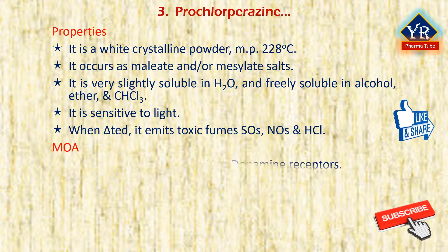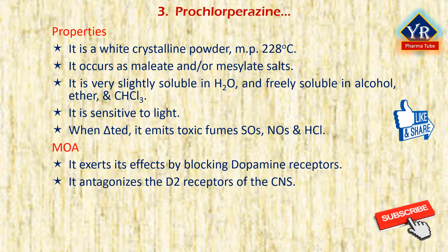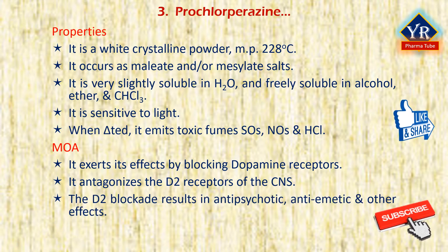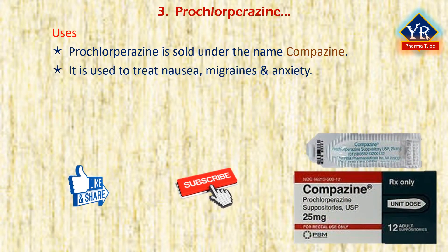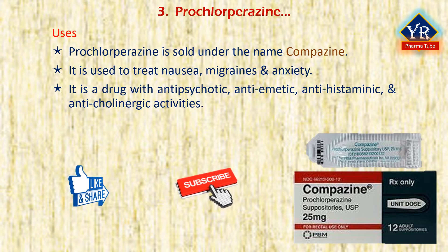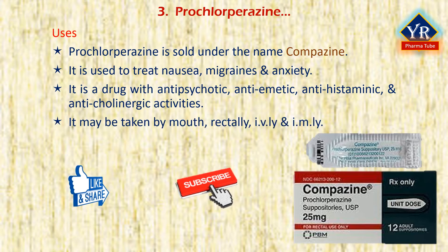Prochlorperazine is thought to exert its antipsychotic effects by blocking dopamine receptors, analogous to chlorpromazine. Both compounds antagonize dopaminergic D2 receptors in various pathways of the central nervous system, resulting in antipsychotic, antiemetic, and other effects. Prochlorperazine is sold under the brand name Compazine. It is used to treat nausea, migraines, and anxiety, and is a drug with antiemetic, antipsychotic, antihistaminic, and anticholinergic activities. It can be administered by mouth, rectally, injection into a vein, or injection into a muscle.